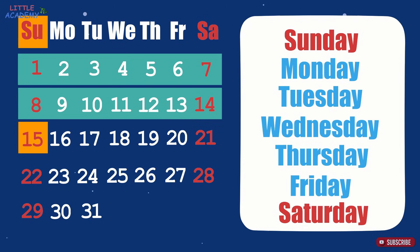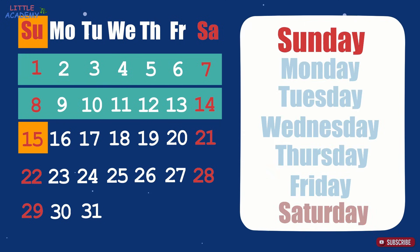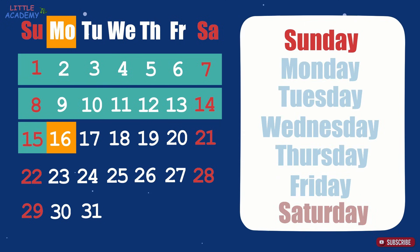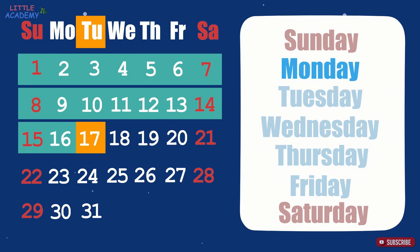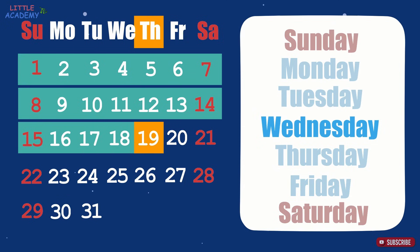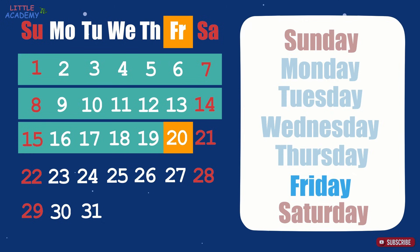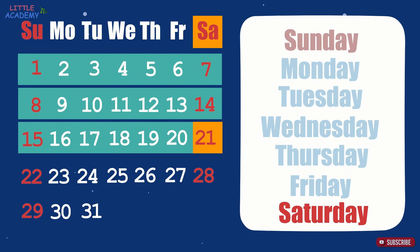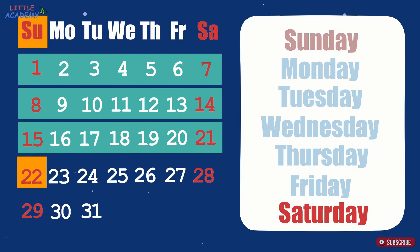So if the 15th of January was Sunday, then the next day, January 16th, is Monday. January 17th will be Tuesday, January 18th will be Wednesday, January 19th will be Thursday, January 20th will be Friday, January 21st will be Saturday, and January 22nd will be Sunday again, and so on.